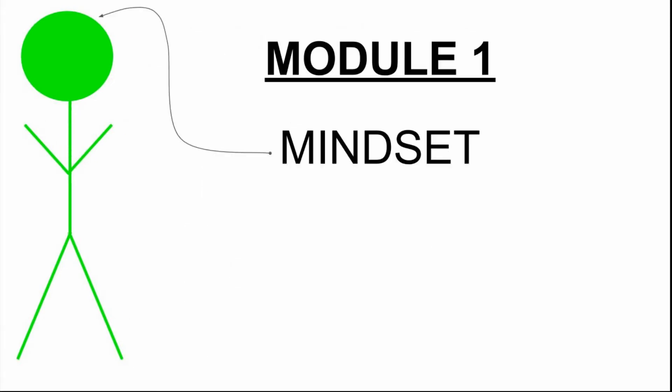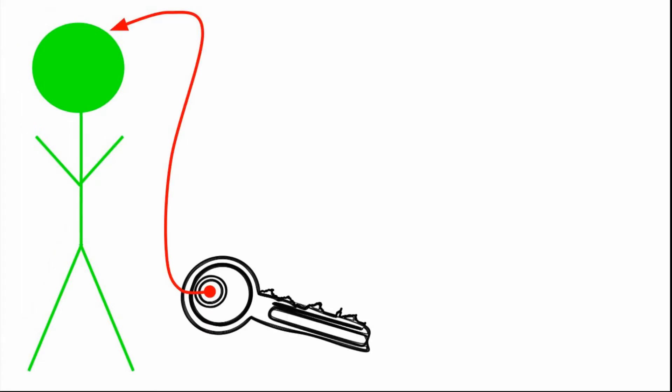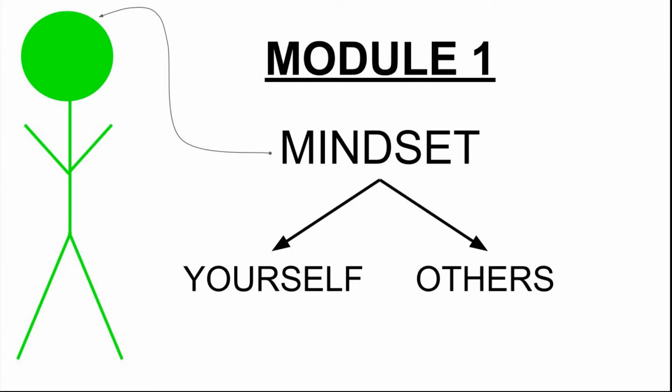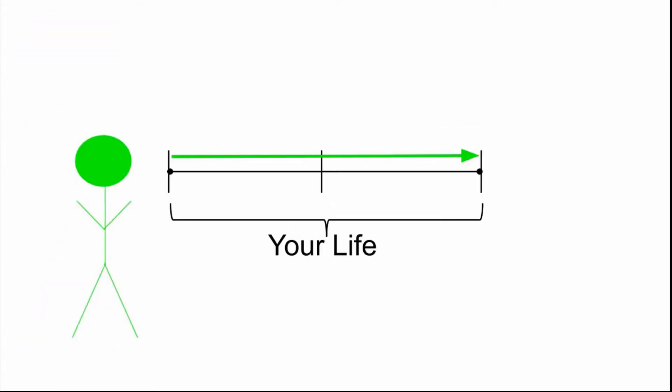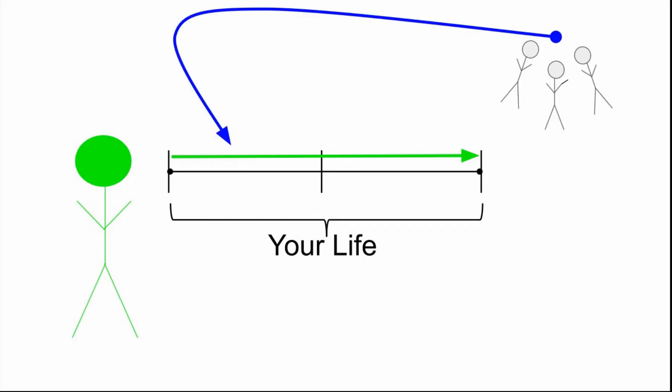Module 1 is all about the mindset, because mindset is key. You see, mindset is how you treat yourself and others. The line between helping yourself pick a life direction and helping someone else is a very fine one. What I mean by that is, to succeed in either, you have to have a certain mindset to work off of.